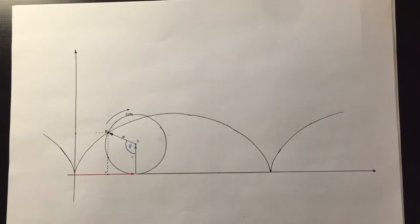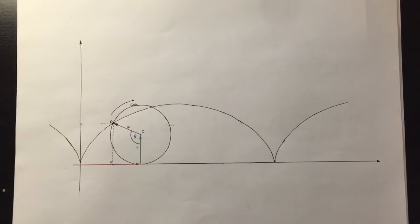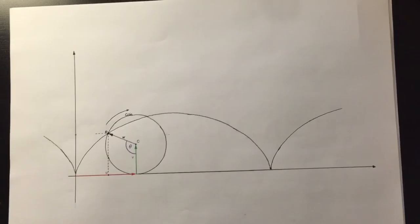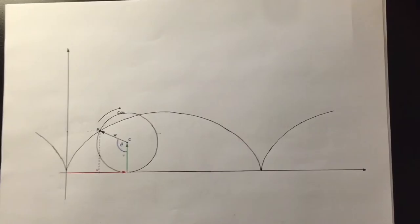Therefore, the vector cos minus theta i plus sin theta j moves clockwise. This implies that the vector cos theta i minus sin theta j moves clockwise as the theta is measured clockwise as well.